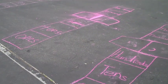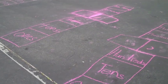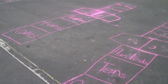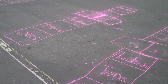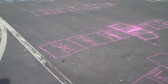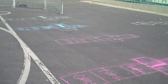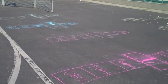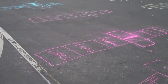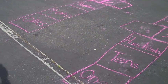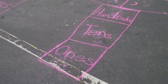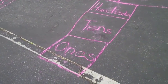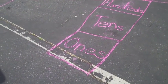This activity helps students learn the names of the place value positions. In third grade, we start with the ones place and progress to the ten thousands place, but this activity can easily be adapted to incorporate more or fewer places, as well as the places to the right of the decimal point.